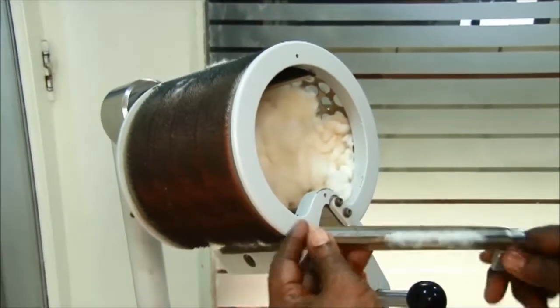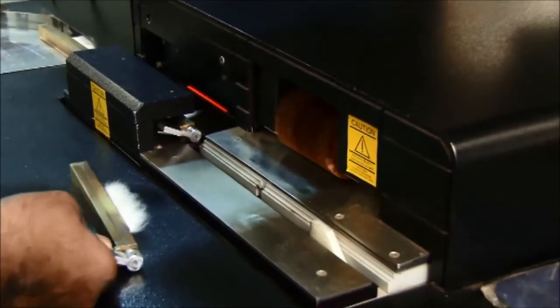For the micronaire module, a predetermined mass of raw cotton is placed in a measurement space and compressed.